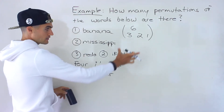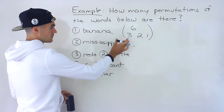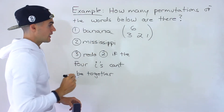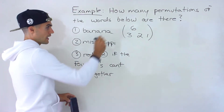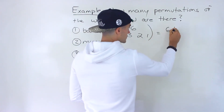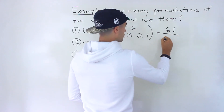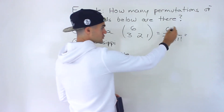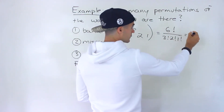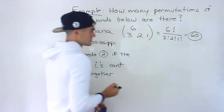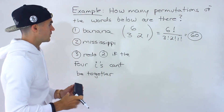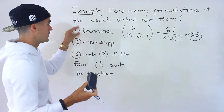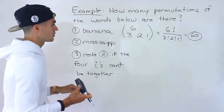The value of this multinomial coefficient is basically going to be the number of ways all of these letters can be arranged. So this would end up being six factorial over three factorial times two factorial times one factorial. The answer is going to be 60. So there are 60 words that can be made when you rearrange the letters in the word banana.